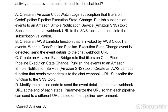Options: A) Create an Amazon CloudWatch log subscription that filters on CodePipeline pipeline execution state change. Publish subscription events to an Amazon Simple Notification Service topic. Subscribe the chat webhook URL to the SNS topic and complete the subscription validation. B) Create an AWS Lambda function that is invoked by AWS CloudTrail events. When a CodePipeline pipeline execution state change event is detected, send the event details to the chat webhook URL.